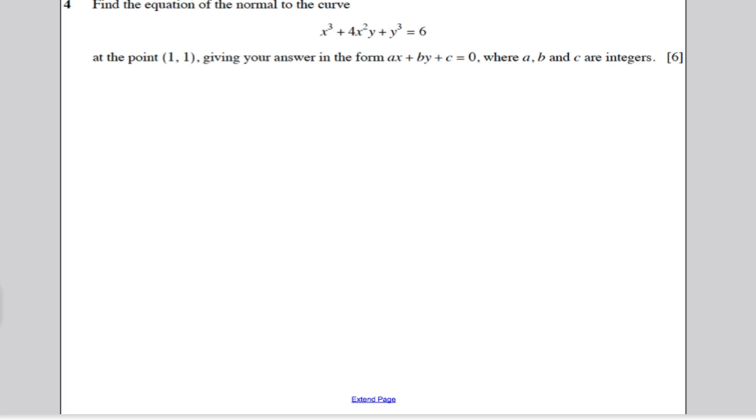So this is almost exactly like the first video question I did. I've got an implicit curve here because it's not y the subject of the formula. I want the equation of the normal at the point (1,1) in this very specific form. What I'm going to do is I'm going to differentiate the curve with respect to x.